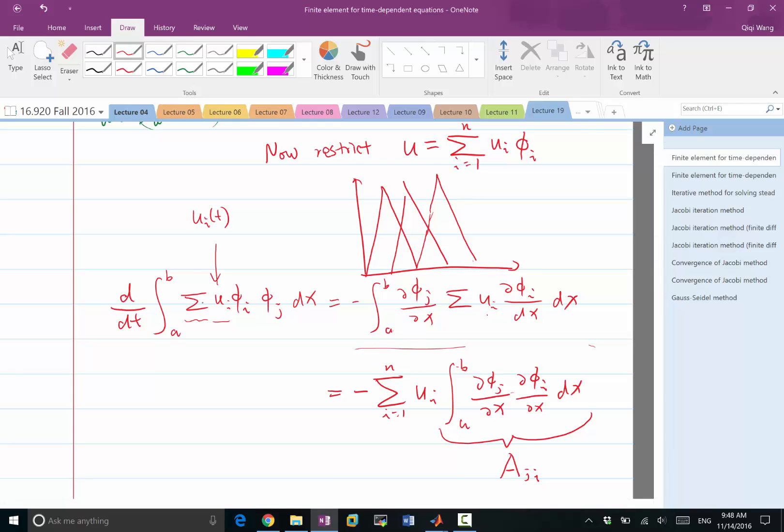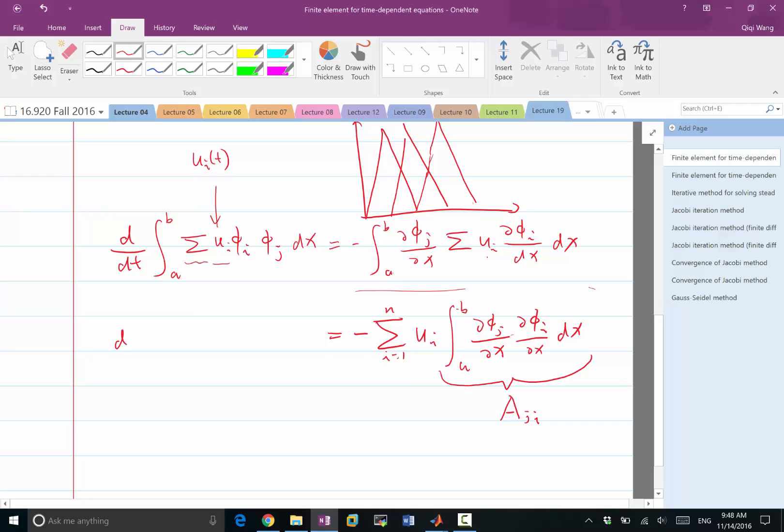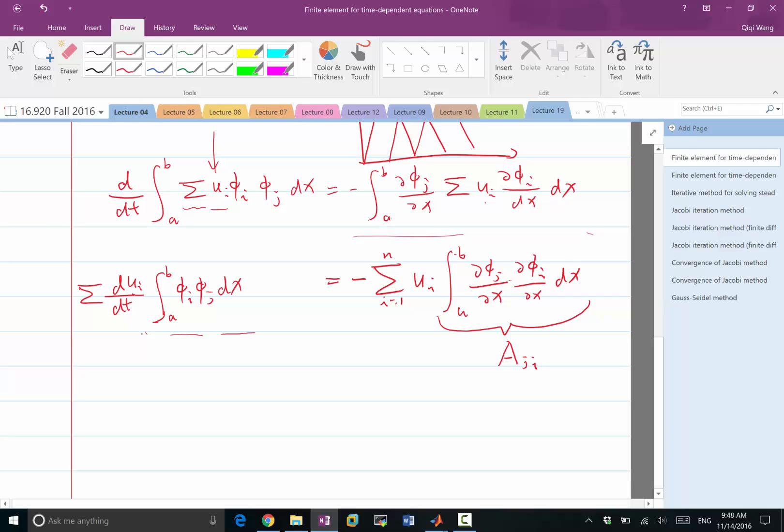What we can pull out of the time derivative is the remaining integral in space. So let's write it down, d/dt of, and the summation can be pulled out, but dui/dt has to be put onto the time derivative. And then we have integration of phi_j times phi_i dx. And these are not in the time derivative, because they are not functions of time. Now, this is the discretization of a different bilinear form.